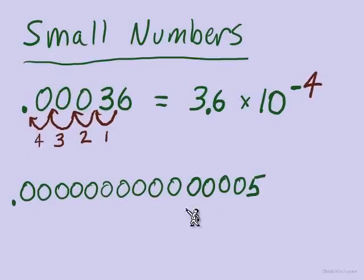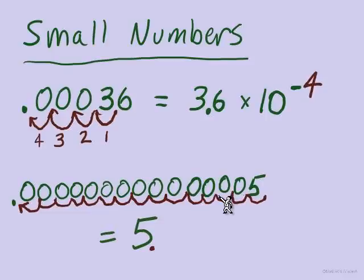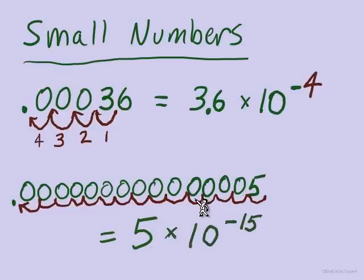Our next example is the diameter of an electron in meters — 5 quadrillionths of a meter, or 5 femtometers. We pull off the non-zero digit, the 5, and the decimal point is currently right behind the 5. We need to count how many places it moves to land back at its original position — that's 15 places to the left. So the diameter of an electron is 5 times 10 to the negative 15.